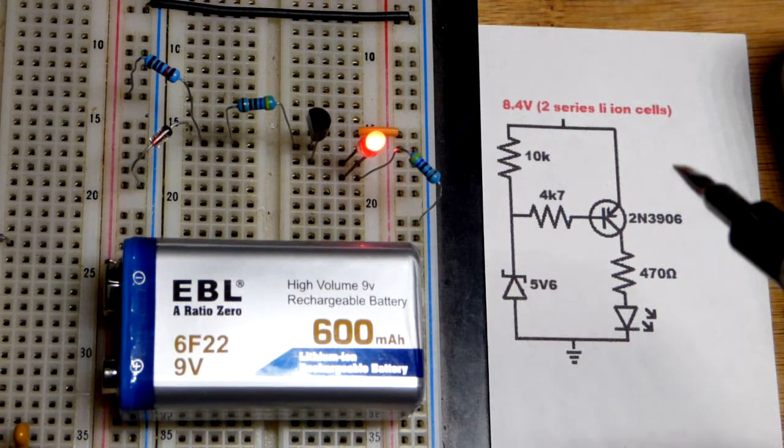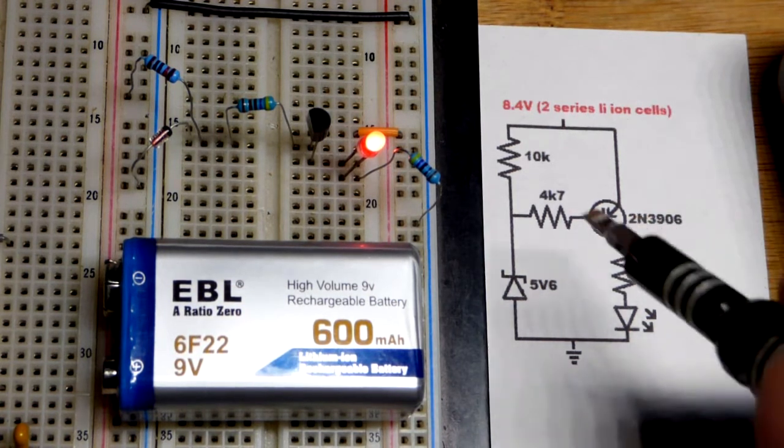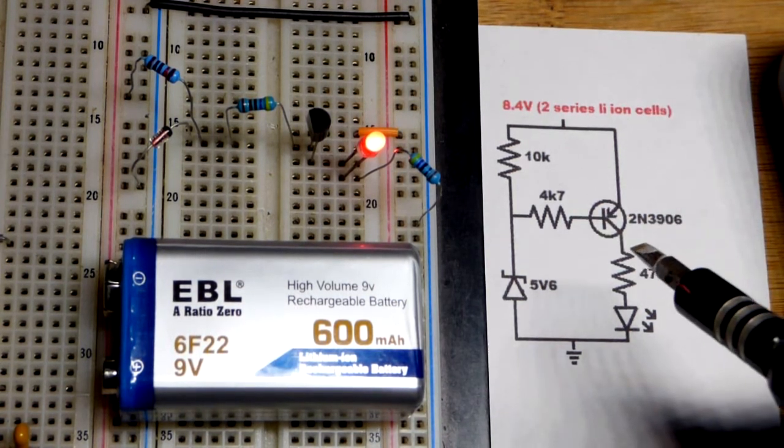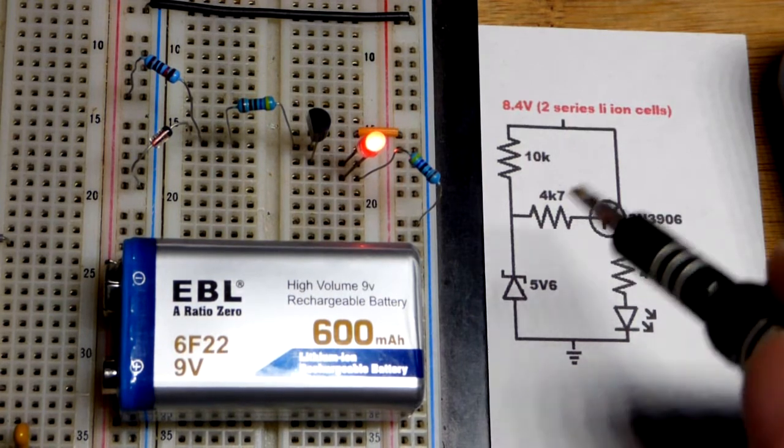So we discussed that a lot in the last video. We used the NPN bipolar junction transistor though. This is PNP. They have opposite chemistries.